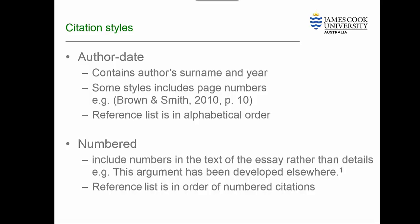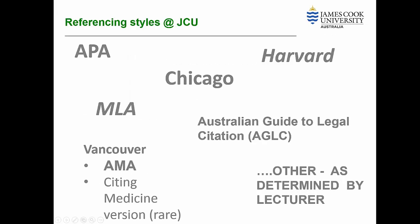The library has referencing guides that cover the main styles used at JCU. These include APA, produced by the American Psychological Association; Harvard; AMA, which is based on Vancouver, a medical style; MLA, from the Modern Languages Association; and Chicago.